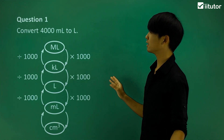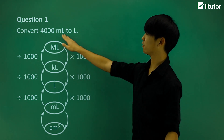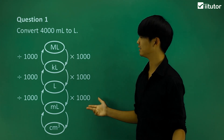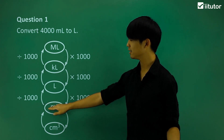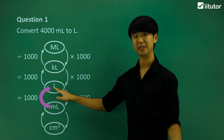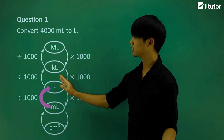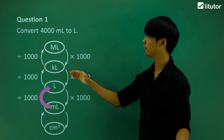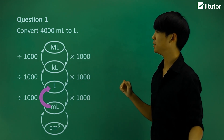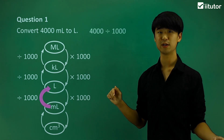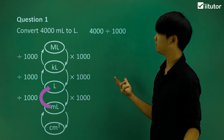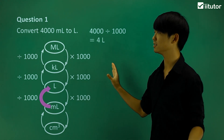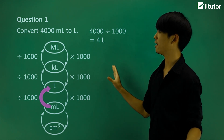Looking at the first question, we're going to convert from 4,000 milliliters to liters. Going from milliliters up to liters, we divide by 1,000. So 4,000 milliliters divided by 1,000 gives us simply 4 liters. That was a nice, very simple conversion.